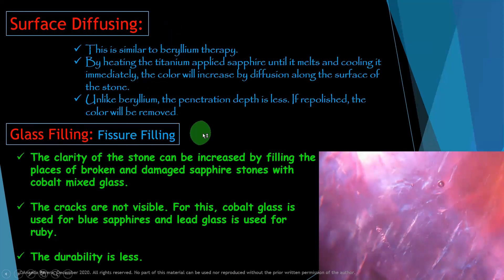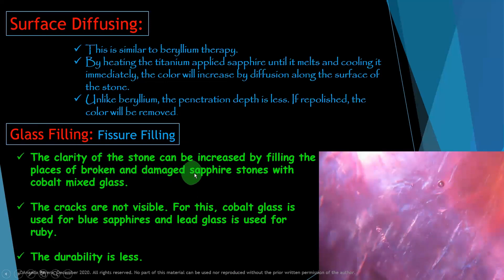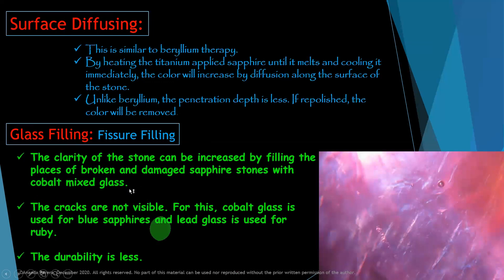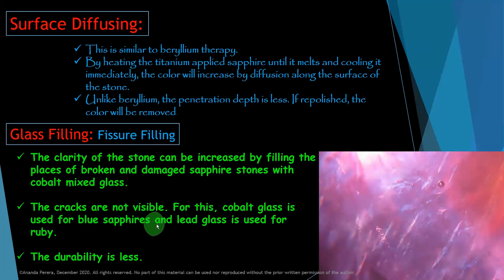The next treatment is glass filling, also called fissure filling. Here, glass filling is done inside the inclusions of ruby. The clarity of the stone can be increased by filling the places of broken and damaged sapphire or ruby stones with cobalt-mixed glass. Then the cracks disappear and are no longer visible.